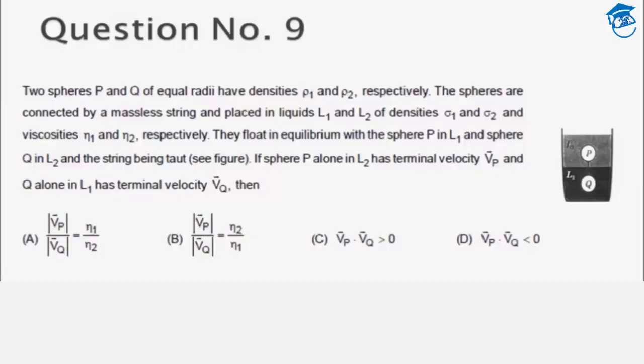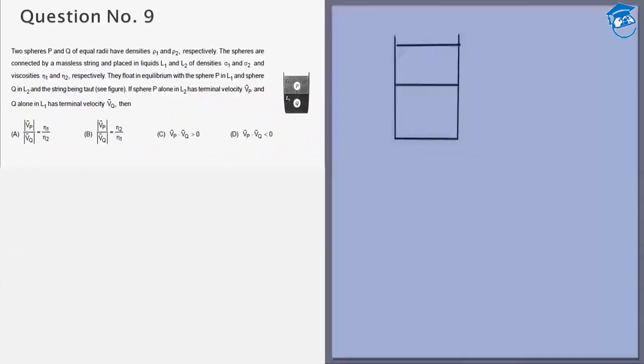Now this is a slightly tricky question with some concepts involved. We have two liquids L1 and L2 and we have two objects attached by a string, P and Q. We are given that the radii are equal and the densities are ρ₁ and ρ₂, so the densities of the spheres are ρ₁ and ρ₂. The densities of the liquids are σ₁ and σ₂.